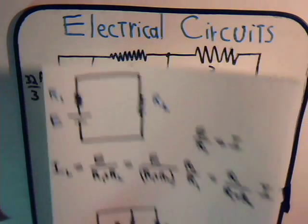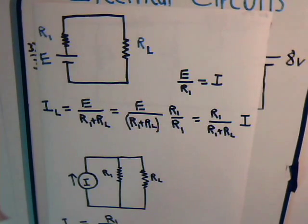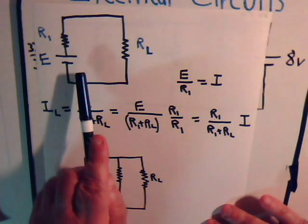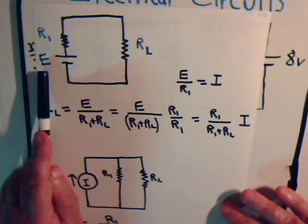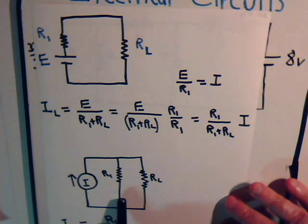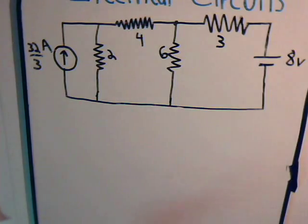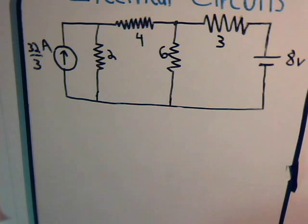This is what we developed in the last video — this circuit and this circuit are equivalent, provided that the voltage source magnitude is equal to the product of the resistor that's in parallel with the current source. So multiplying this times this, that's 64 over 3 volts.